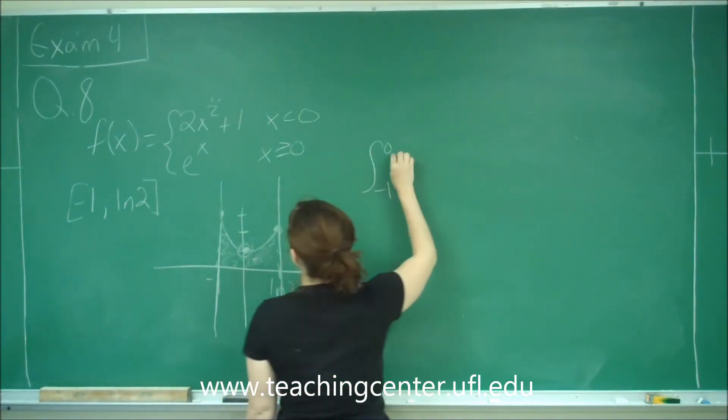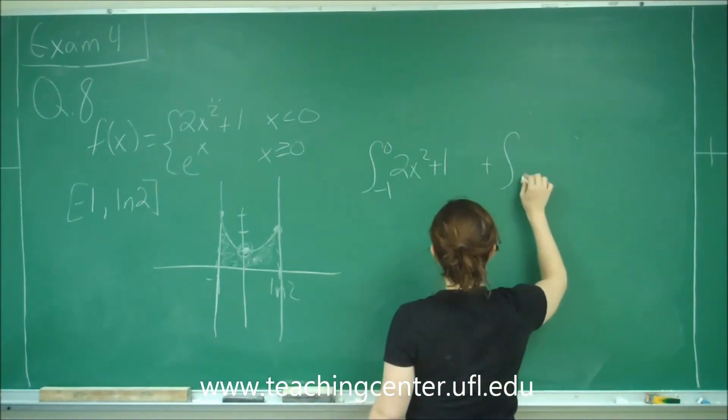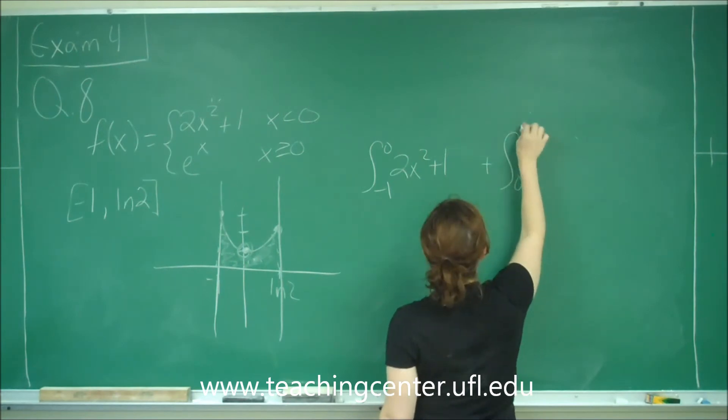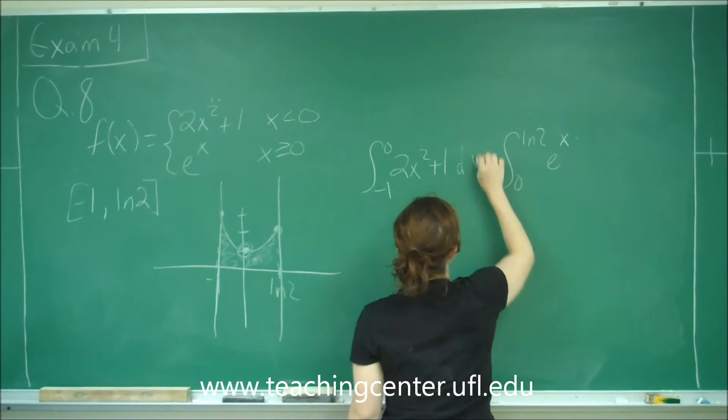we're going to do the integral of 2x squared plus 1 dx, plus the integral from 0 to ln of 2 of e to the x dx.